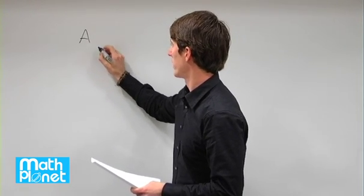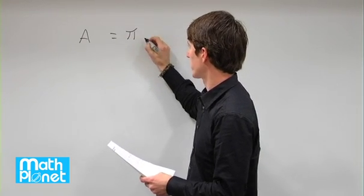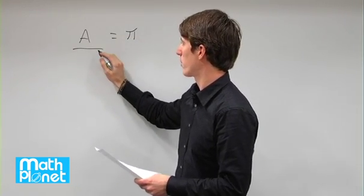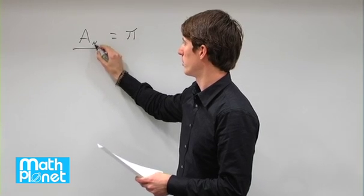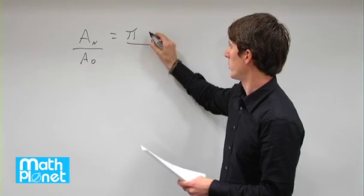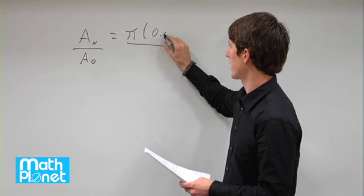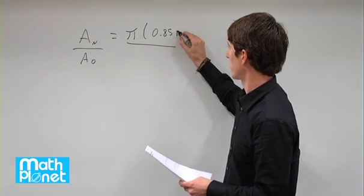The formula for area is just pi r squared, pi times r squared. So let's do a ratio of area new over area original. We'll say area new is pi r squared, where r is now 0.85 times r.